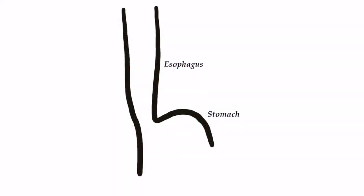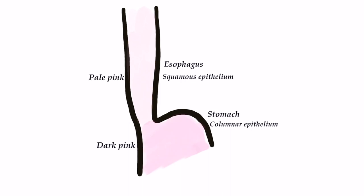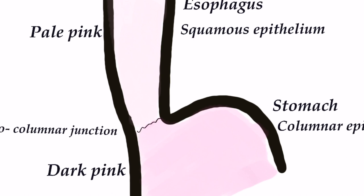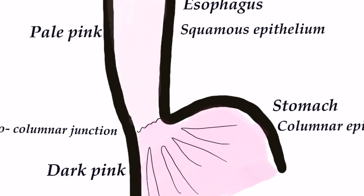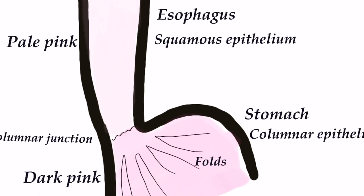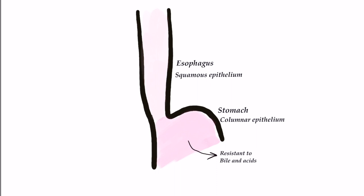Normal esophagus is lined by stratified squamous epithelium, which is pale pink in color. This changes to gastric columnar mucosa, characterized by presence of oxyntic cells, at the squamo-columnar junction. At what point should we say that gastric mucosa has started? There are various definitions of squamo-columnar junction; the most followed is the starting of gastric mucosal folds, as there are no significant folds in esophageal mucosa.